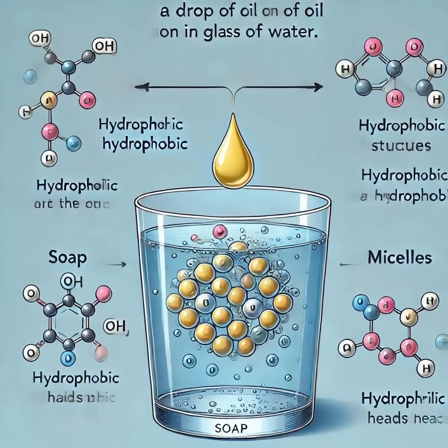Soap molecules have two distinct ends: one that's hydrophilic, or water-loving, and one that's hydrophobic, or water-repellent. The hydrophilic end is attracted to water, while the hydrophobic end repels it.